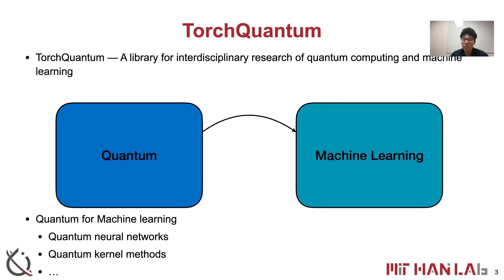There are two directions of research in this field. The first direction is quantum machine learning, in which we want to use quantum computers to do machine learning tasks better than classical counterparts — for example, be faster, more accurate, and more energy efficient. Our library supports many state-of-the-art quantum machine learning algorithms, such as quantum neural networks and quantum kernel methods.